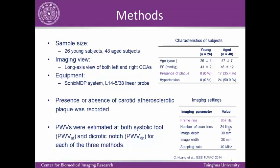In this study, 26 healthy young subjects and 48 aged subjects were included. Ultrasonic radiofrequency data were acquired from both left and right carotid arteries using Sonic MDP systems and linear transducer arrays. The presence or absence of carotid plaques was also recorded, which commonly appear near the bifurcations. Optimal imaging settings were determined according to a previous study, and pulse wave velocities were estimated at both the systolic foot and dicrotic notch for each of the three methods.